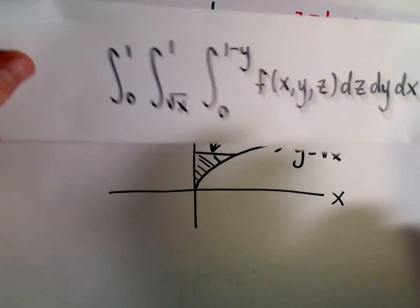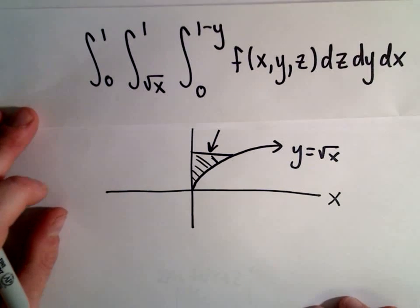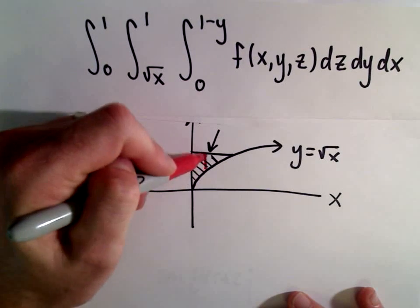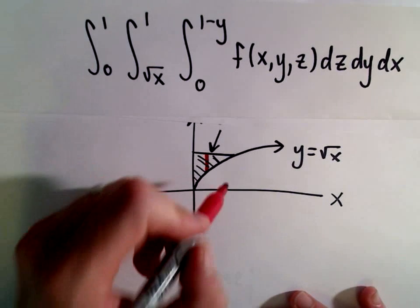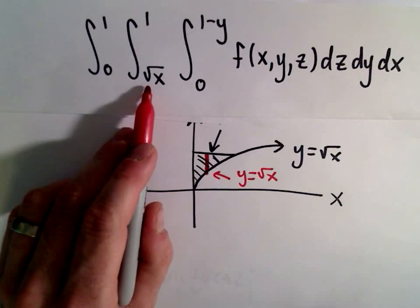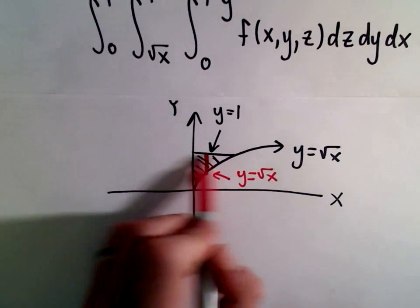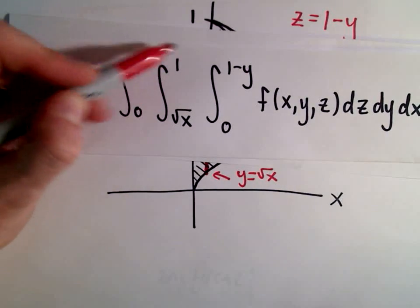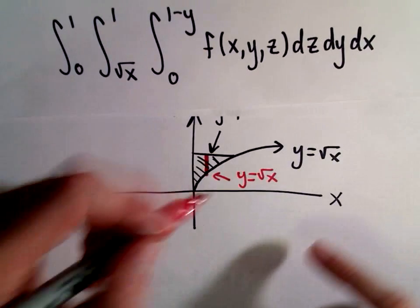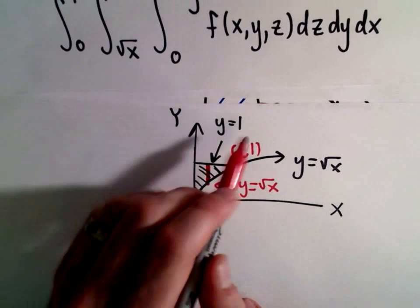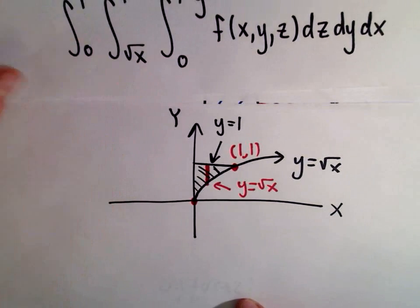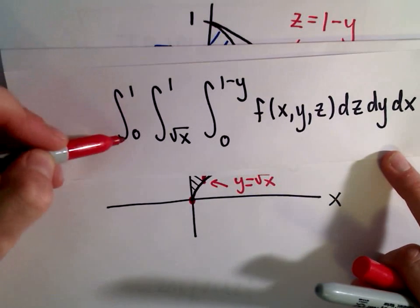Going back to the original setup — now it's like doing a double integral over the xy-plane region. Integrating with respect to y, I draw a vertical line through the region. The lower limit is y equals square root of x and the upper limit is y equals 1. For the outermost x-integral, the curves y = 1 and y = √x intersect at (1, 1), so x runs from 0 to 1. That's where all the outer limits of integration come from.